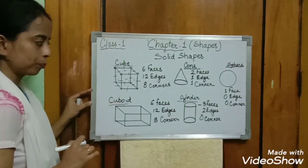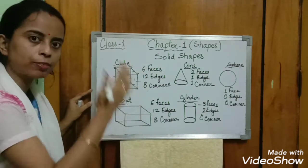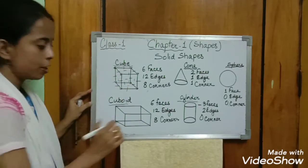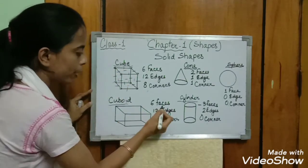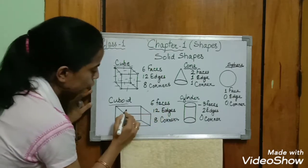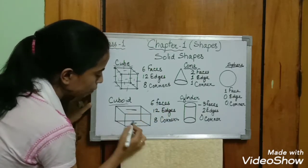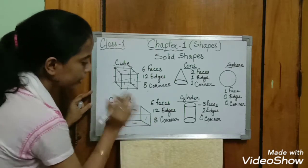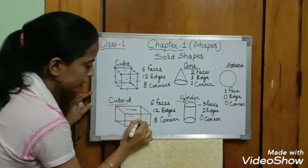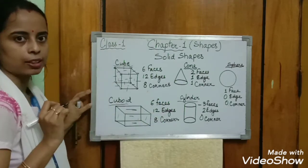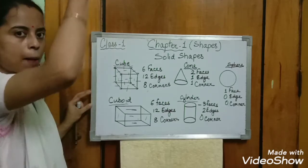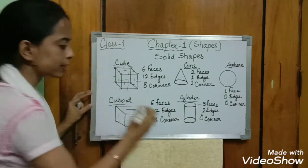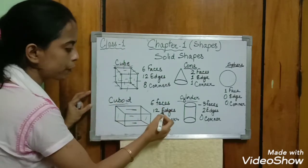Now come to cuboid. Cube and cuboid have the same number of faces, edges, and corners. Cuboid has six faces: up, down, left side, right side, back side, and front side — six faces total.